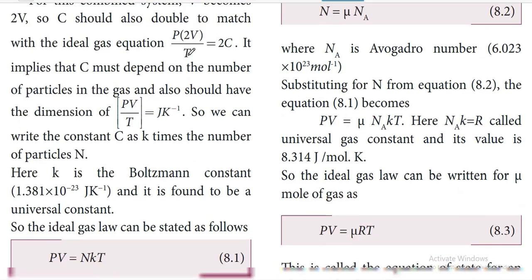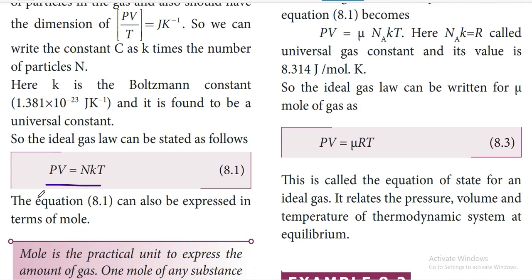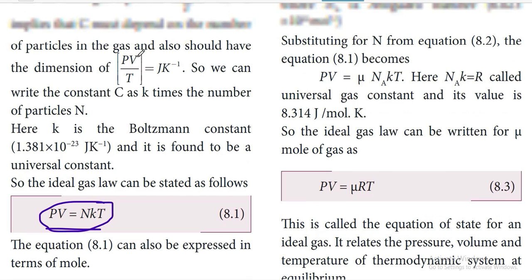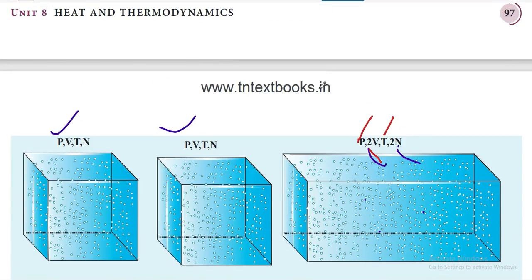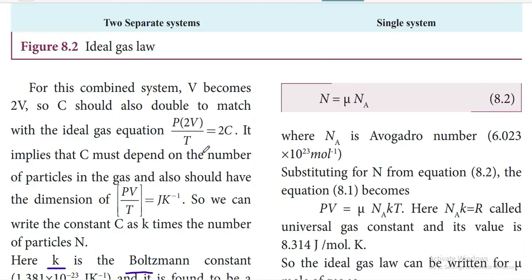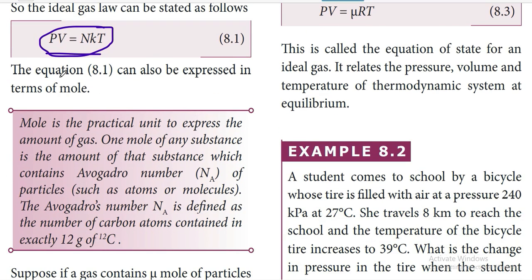They have given a derivation showing how the formula PV = NkT is obtained. From the examination point of view, the formula you need to know is PV = NkT. Here k is the Boltzmann constant, with value 1.38 × 10⁻²³ joule per kelvin, and it is a universal constant. N is the number of molecules or particles within the container; P is pressure, V is volume, and T is temperature.